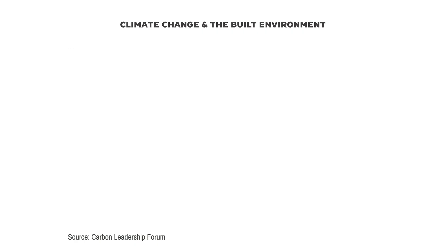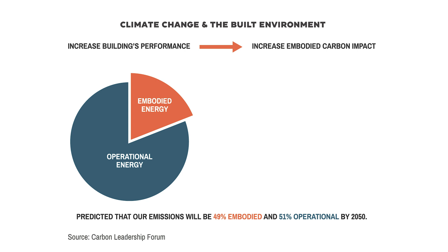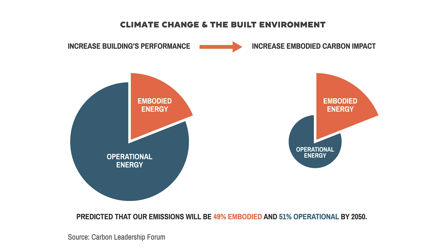As we've gotten better at reducing operational carbon over the last decades — through better energy performance, renewable energy, greener grids, and more efficient appliances — the proportion of greenhouse gas emissions due to the embodied carbon of buildings has increased.